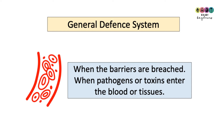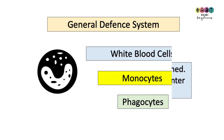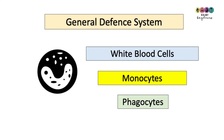Now, what happens if those barriers are breached? If pathogens or toxins enter the blood or tissues, the general defense system relies greatly on white blood cells — in particular, monocytes, which we can remember as 'munchers' because they're phagocytes. Phagocytes engulf and destroy other cells, such as bacterial cells or parts of other cells.